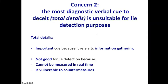Concern number two is that what most people are looking for is something like total details — a total amount of information. That's a very popular cue in verbal lie detection, but it's completely and entirely unsuitable for lie detection purposes. It is an important cue because it tells you a lot about information gathering, and the main aim of an interview is to get information — total details gives you that. But for lie detection, it is not good.